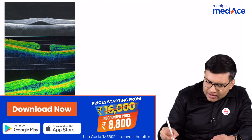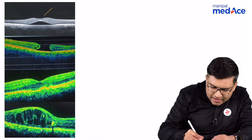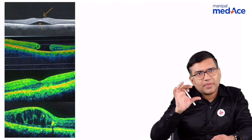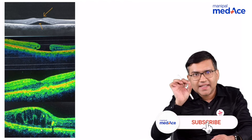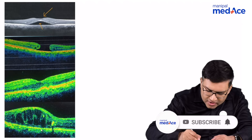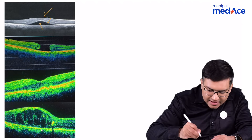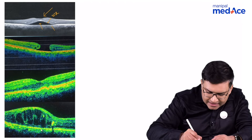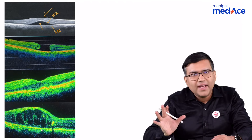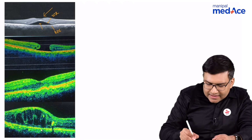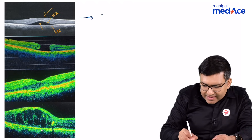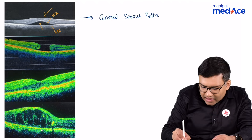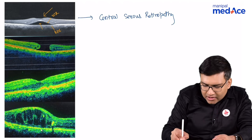The first image shows fluid in the subretinal space. The subretinal space is between the neurosensory retina — the 9 layers — and the 10th layer, which is the retinal pigment epithelium. So we have fluid here. This is the OCT picture of central serous retinopathy.